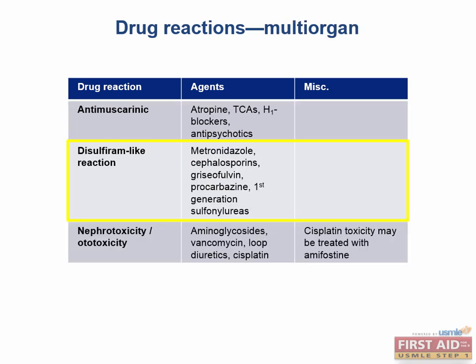Let's talk about drugs that cause a disulfiram-like reaction. These include metronidazole, cephalosporins, griseofulvin, procarbazine, and first-generation sulfonylureas. Disulfiram is a drug given to alcoholics to discourage further drinking. When ethanol is converted to acetaldehyde, this acetaldehyde buildup causes the hangover effect — vomiting and nausea. Disulfiram prevents the body from further degrading acetaldehyde, so when an alcoholic drinks while taking disulfiram, they feel nauseated and may vomit. These listed drugs have a disulfiram-like effect, so don't be surprised when a patient describes these symptoms after drinking while taking these medications.